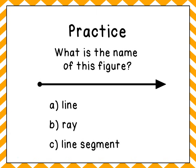Okay, if you chose B, ray, you are correct. You can see here it has an end point on this end, and an arrow on this end, telling me that it continues on in just one direction.